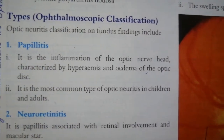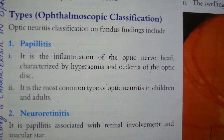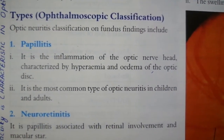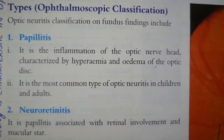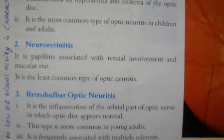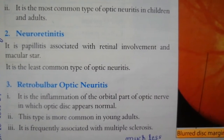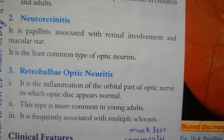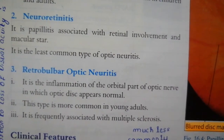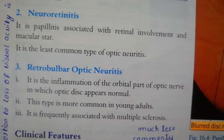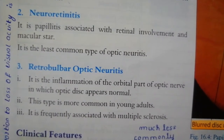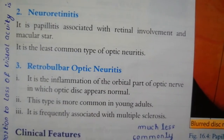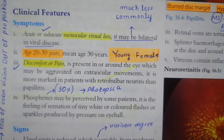Optic neuritis is classified on the basis of fundoscopy findings. Papillitis accounts for one-third of cases. Neuroretinitis is a comparatively rare manifestation. Retrobulbar optic neuritis is the fundoscopic picture in two-thirds of patients presenting with optic neuritis — making retrobulbar neuritis the more common form.